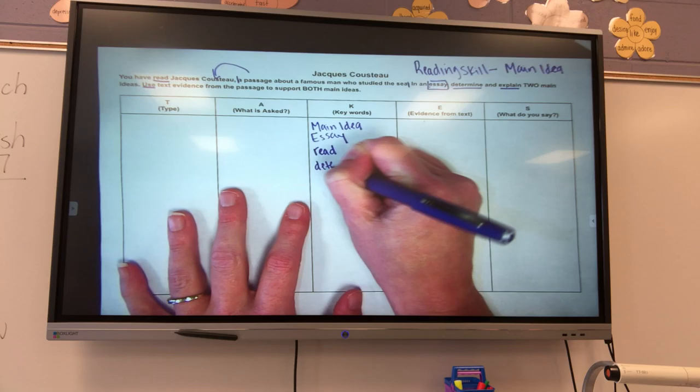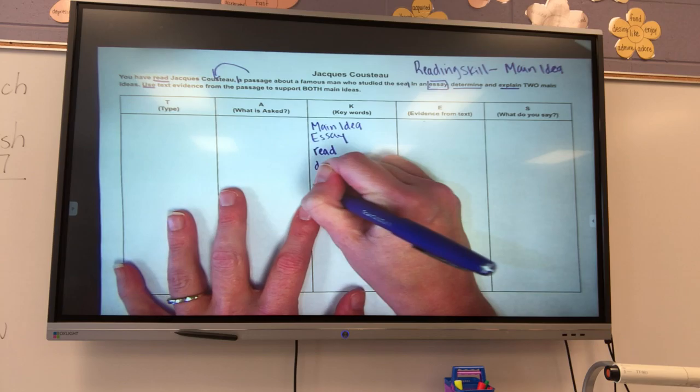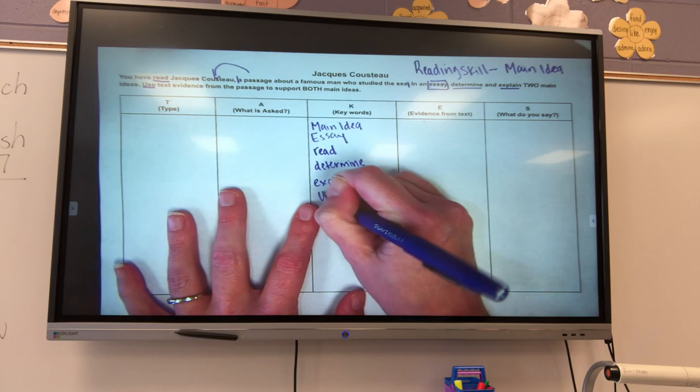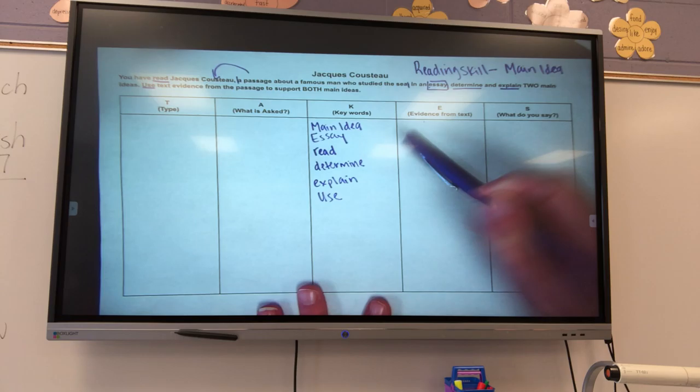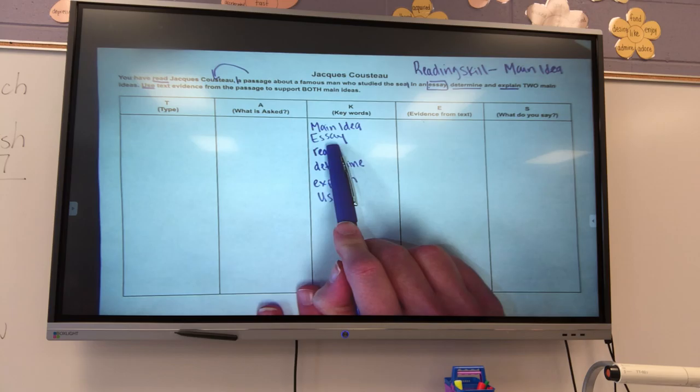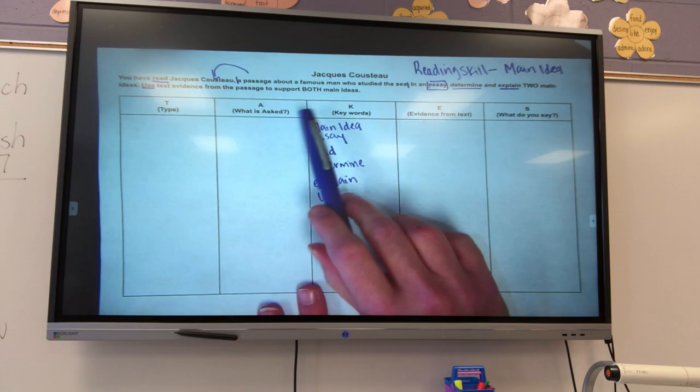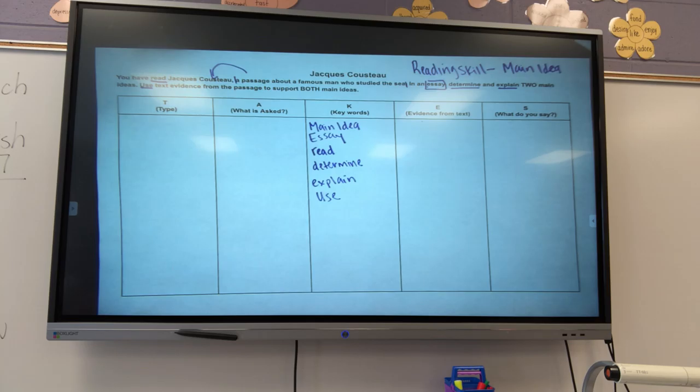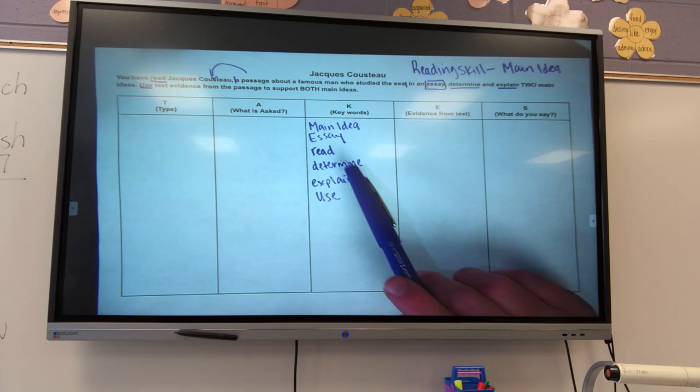It wants me to determine and explain and then it wants me to use. So I'm going to go back through here and all of the verbs that I've underlined, I'm going to add those to my keywords. So I'm going to put read, determine, explain, and use. That gets me my keywords. I'm doing my reading skill, what they're wanting me to write which is an essay, and then I'm writing all of my verbs that I've underlined.